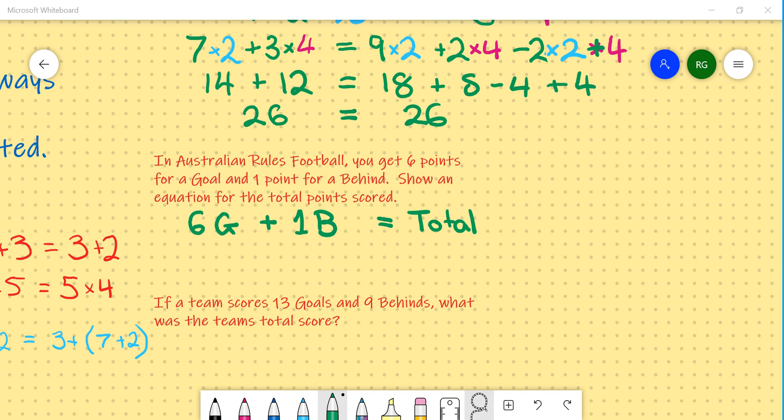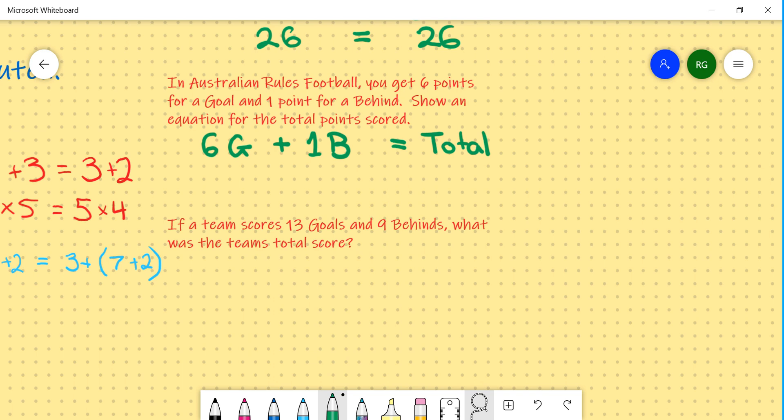If a team scores 13 goals and 9 behinds, what was the team's total score? So all we need to do is substitute the number of goals scored, which in this case was 13. So instead of a g, we're going to write a 13. So we're going to go 6 multiplied by 13 plus 1 multiplied by 9 for the 9 behinds.